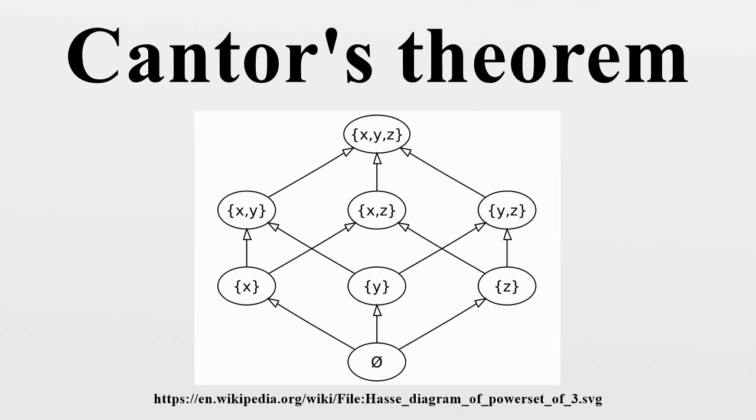Bertrand Russell has a very similar proof in Principles of Mathematics, where he shows that there are more propositional functions than objects. For suppose a correlation of all objects and some propositional functions to have been effected, unless φ_x be the correlate of x, then, not φ_x, i.e., φ_x does not hold of x, is a propositional function not contained in this correlation, for it is true or false of x according as φ_x is false or true of x, and therefore, differs from φ_x for every value of x. He attributes the idea behind the proof to Cantor.